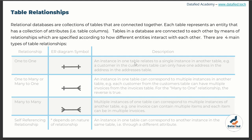A one-to-one relationship is when an instance in one table relates to a single instance in another table. For example, a customer in the customers table can only have one address in the addresses table. So if you create a relationship between the customers table and the addresses table, you would have a one-to-one relationship.